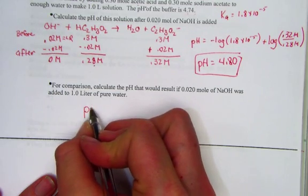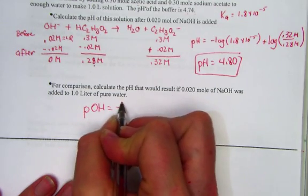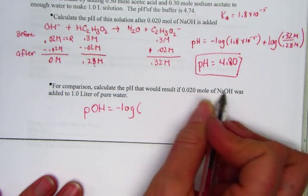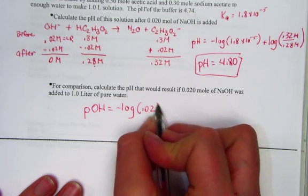We know that pOH is found by taking the negative log of the hydroxide ion concentration, 0.02.